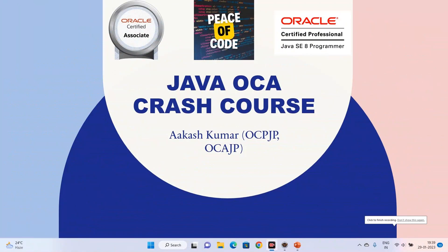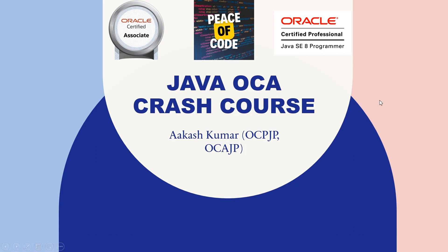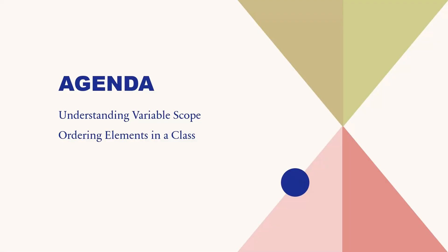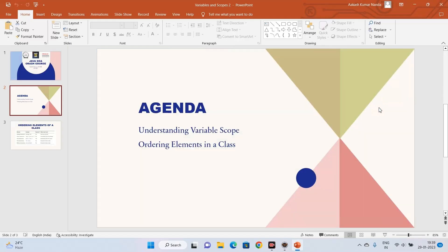Hi guys, welcome to Piece of Code and welcome to this lecture. We are going to continue with our Java OCR crash course series, continuing from where we left off. We're covering variables and scopes — this is the second video on that topic. Today we'll see more on variable scopes in detail, some examples, and then the ordering of elements in a class or Java file, because exam questions may try to trick you on these topics.